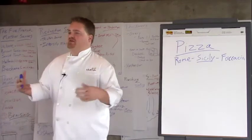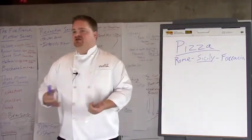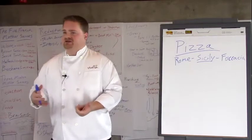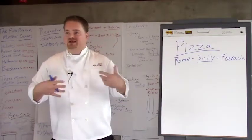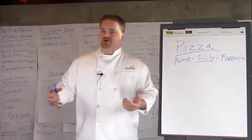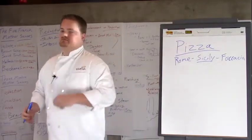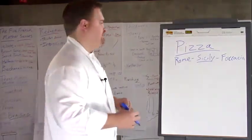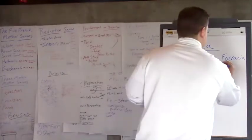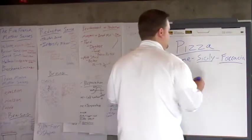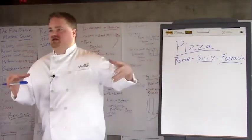Then they start topping it with other things — usually a very simplistic approach: some sliced tomatoes, sometimes tomato sauce, sometimes arugula dressed lightly in olive oil placed on top. You slice the focaccia and eat a little piece of bread. And this kind of stemmed into Sicilian-style pizza, which is the big loaf pan pizza that you see in squares.